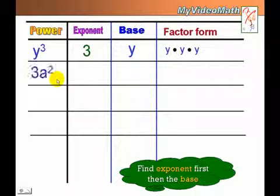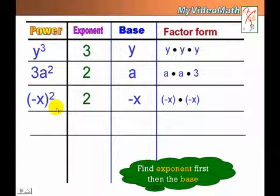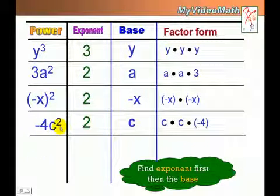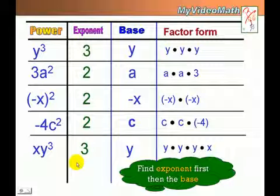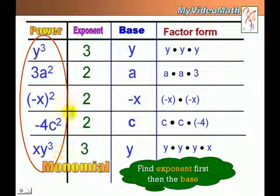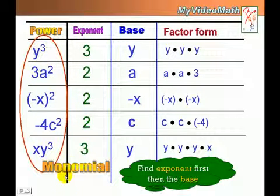Let's look at more examples with variables. For each expression, we find the exponent first, then the base, then write the factor form — for instance, with a coefficient times 3, or times negative 4, or with negative 4 times x. All of these expressions involving variables we call monomials. A monomial is not necessarily only variables — it could be a constant as well. We will be talking about monomials a lot in algebra.